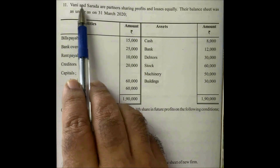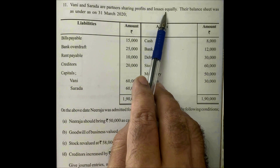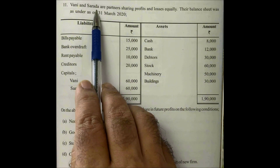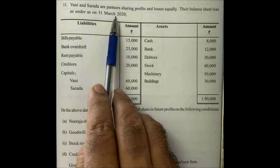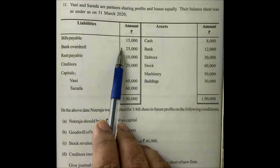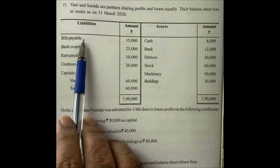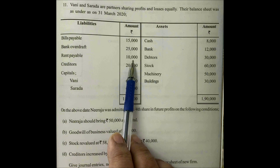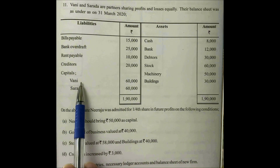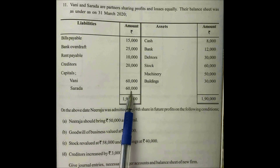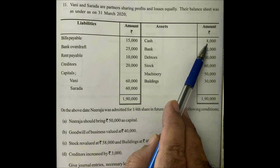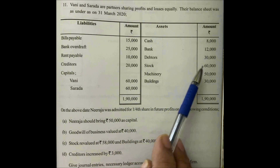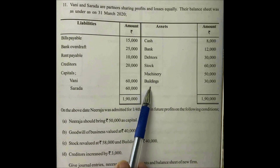Let us see the question. Vani and Sharada are partners sharing profits and losses equally — two members, so the ratio is 1:1. Vani's share is 1/2 and Sharada's share is 1/2. Their balance sheet as on 31st March 2020: liabilities — bills payable 15,000, bank overdraft 25,000, rent payable 10,000, creditors 20,000, capitals of Vani and Sharada 60,000 and 60,000. Assets — cash 8,000, bank 12,000, debtors 30,000, stock 60,000, machinery 50,000, buildings 30,000. Both sides total 1,90,000 rupees.